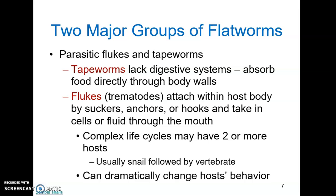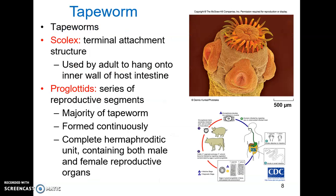All told, about 12 flatworm parasites occur in humans, some of which are tapeworms. Tapeworms are endoparasites. They have a scolex — suckers and hooks at the terminal end of the organism — used to hang onto the inner wall of the host's intestine. This is not a head; there is no concentrated nervous tissue or mouth here. This is followed by a series of proglottids, which make up the majority of the tapeworm and form continuously throughout the worm's life.